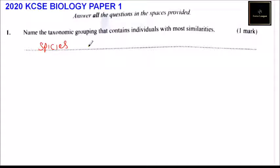We have white, we have Indians, we have Africans — so all of these we can call the human species.